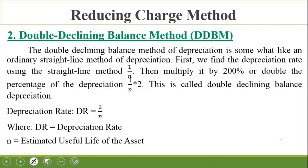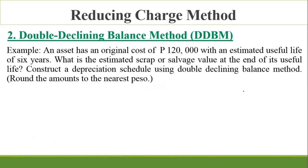The Double Declining Balance Method (DDBM) is somewhat like the straight line method. First, find the depreciation rate using the straight line method, then multiply it by 200% (double the rate). The formula is: DR = 2/N, where DR is the depreciation rate and N is the estimated useful life. Example: An asset has an original cost of 120,000 pesos with an estimated useful life of six years. Construct a depreciation schedule using the double declining balance method.